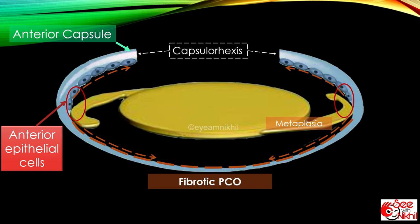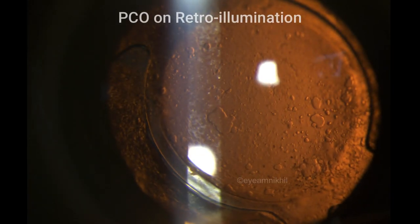Fibrotic PCO causes fibrosis and contraction of capsular bag. When we look at PCO on retro-illumination, the cells have a vacuolated, pearl-like or soap bubble-like appearance.